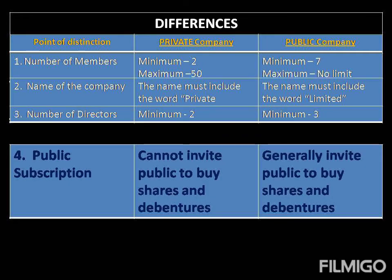The fourth point of distinction is with reference to the buying or subscription of shares. In a private company, only the pre-approved members can buy the shares. No outsiders are allowed to subscribe to the shares, which means that the shares of a private company are not brought into an open market for the public to buy.